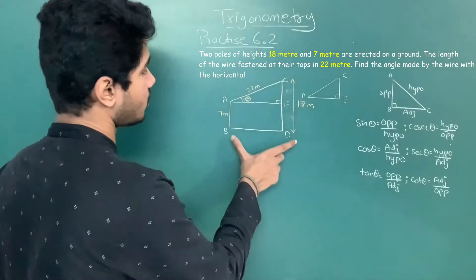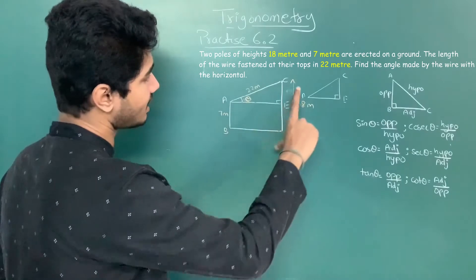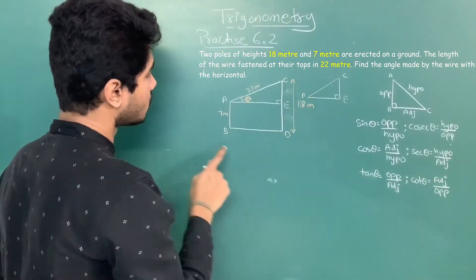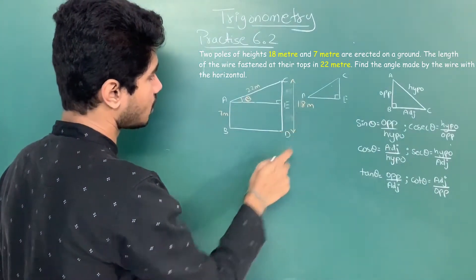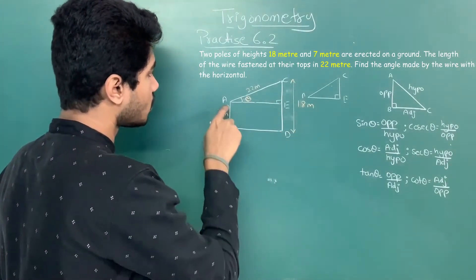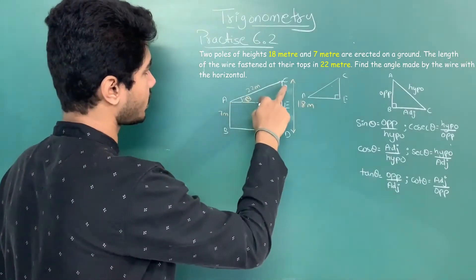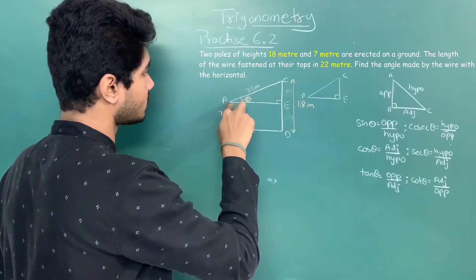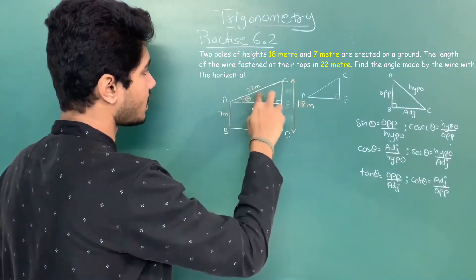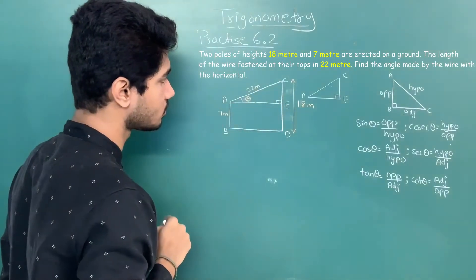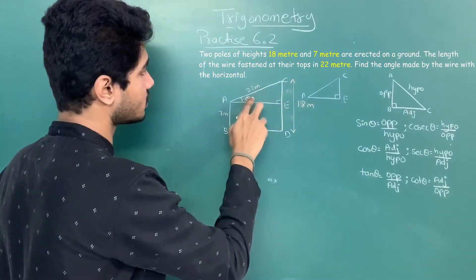I have already made a diagram. AD is the first pole and CD is the second pole. The heights are given as 7m and 18m. There is a wire fastened from the top of the first pole to the second pole. The length of the wire is given as 22m, and the angle of elevation made by this wire is theta.